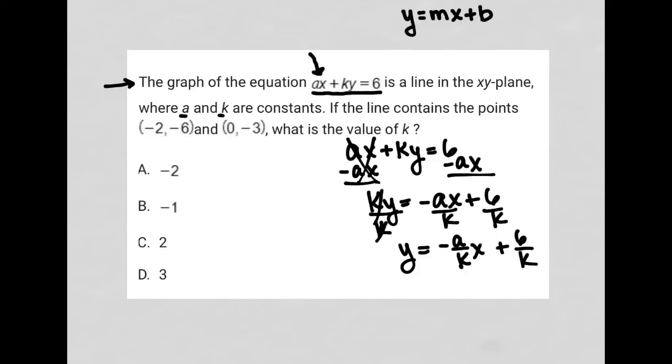What does that mean? That means that I can use those points to plug into my equation. That tells me that when X is equal to negative 2, Y is equal to negative 6, and when X is equal to 0, Y is equal to negative 3. So what is the value of K? That's my question.